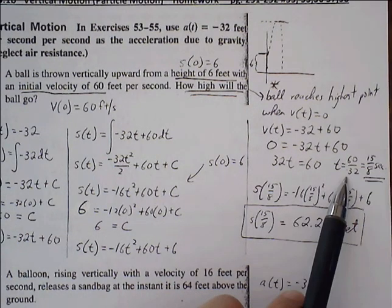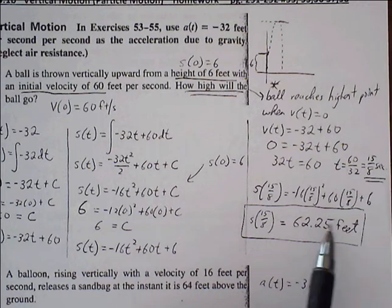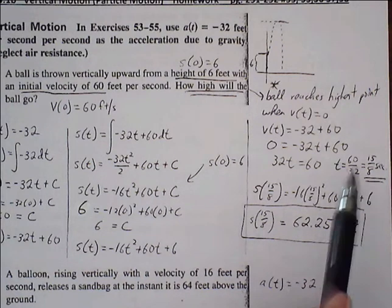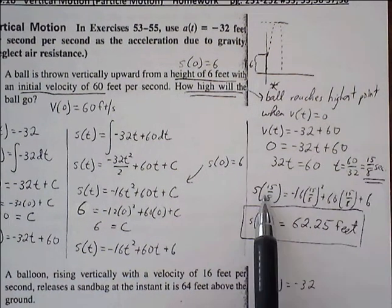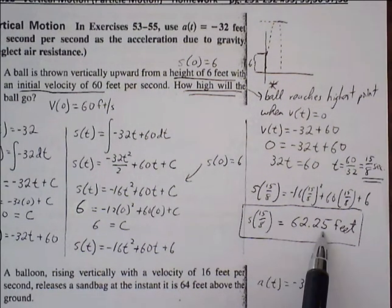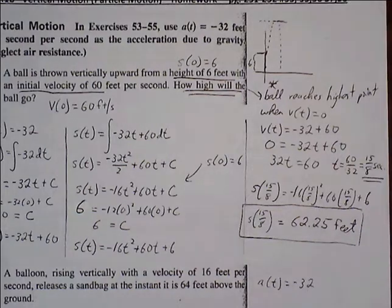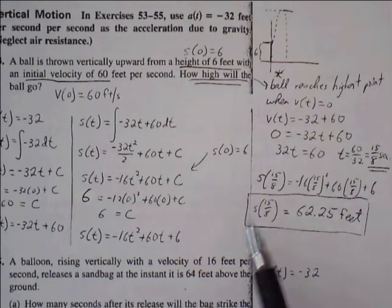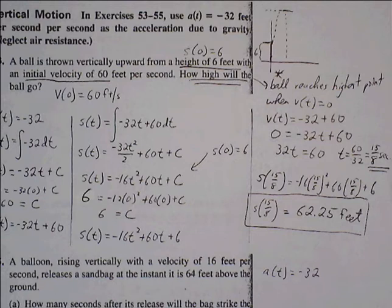Okay, now once we have t, we can plug t back into our position function to find our specific height. So our height at 15 over 8 seconds is going to be 62.25 feet.